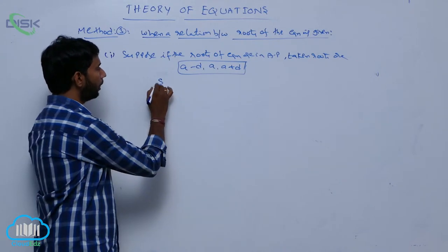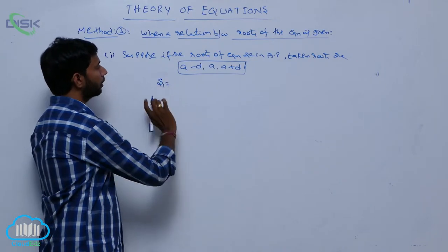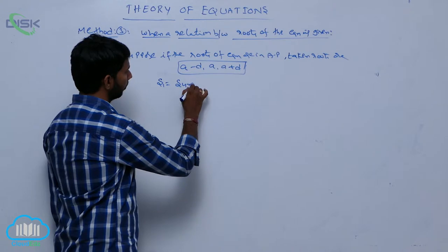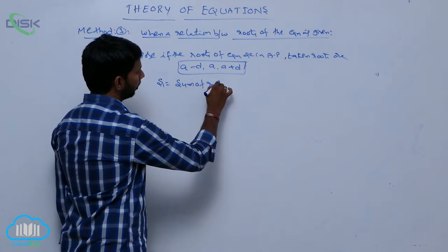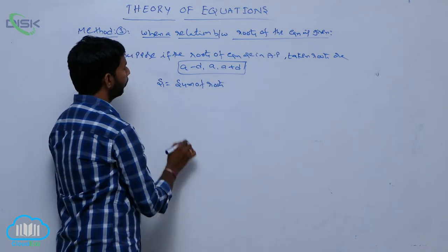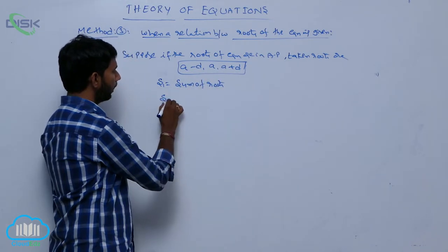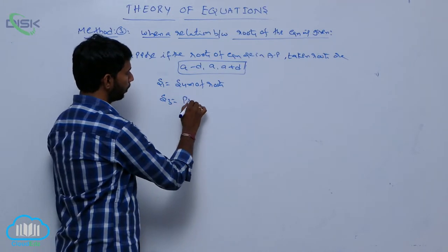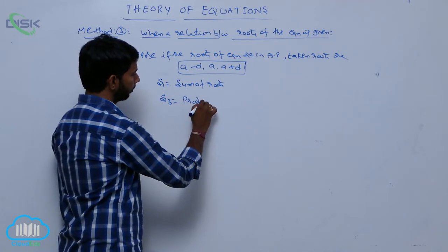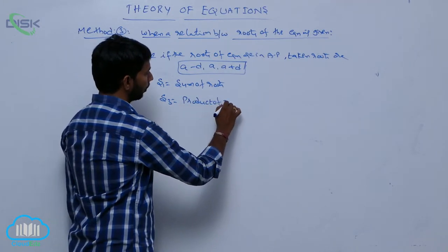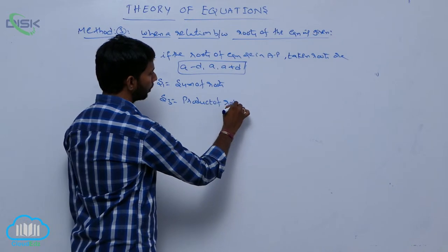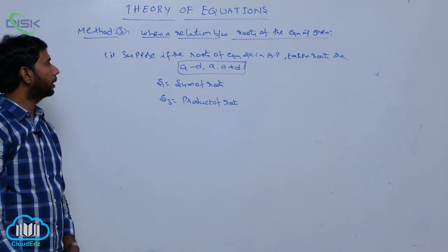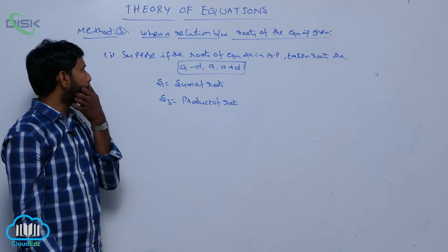First, find the value of S1 — that is, the sum of roots — and S3, which means the sum product of three roots, i.e., the product of roots. Using these, we get the values of A and D.